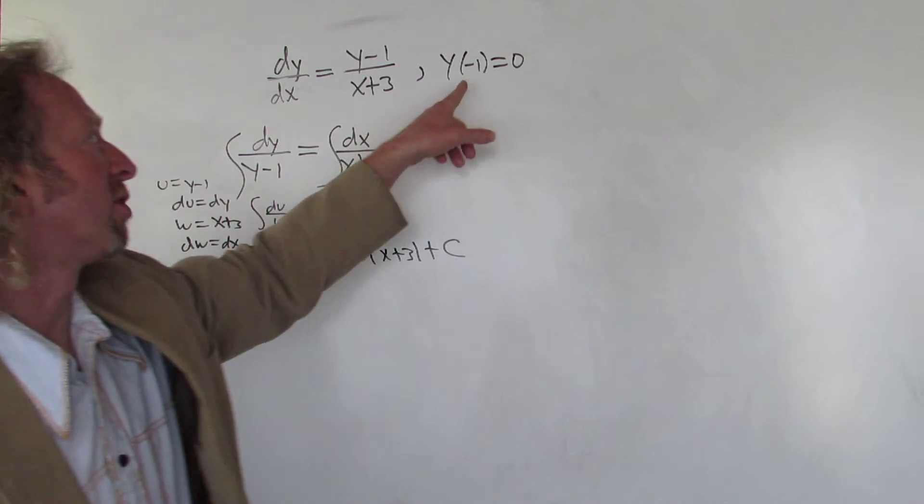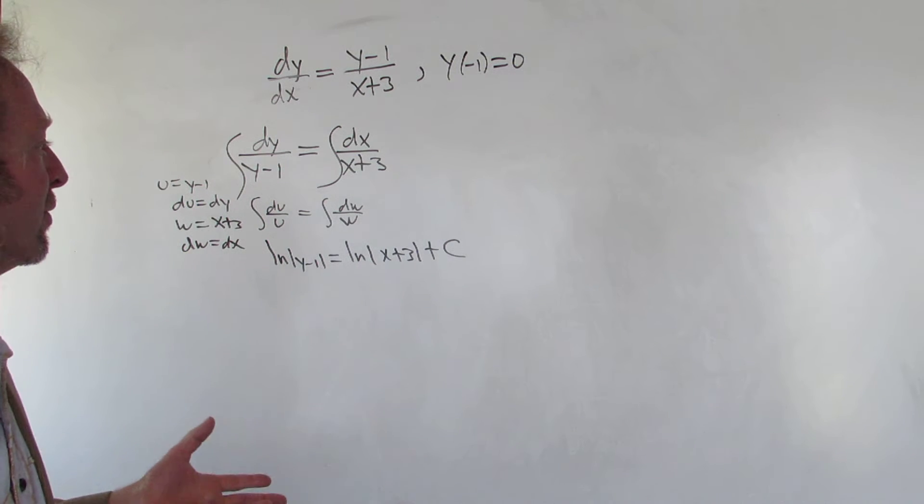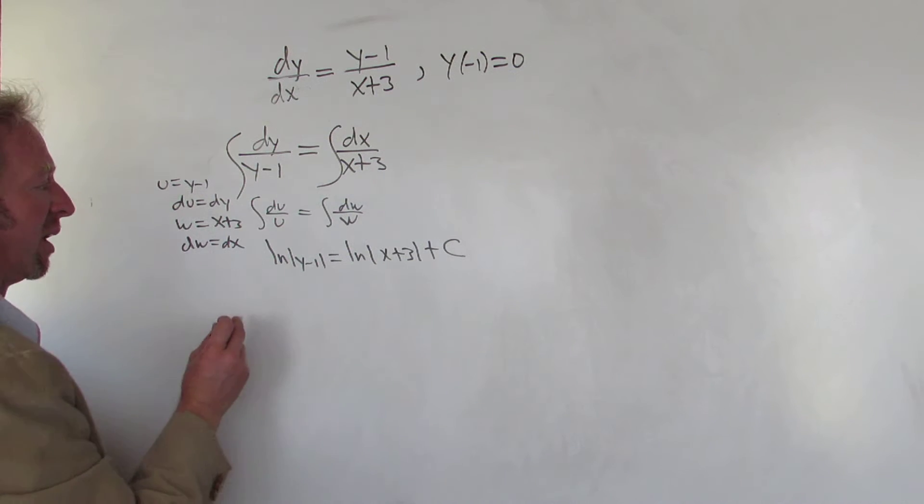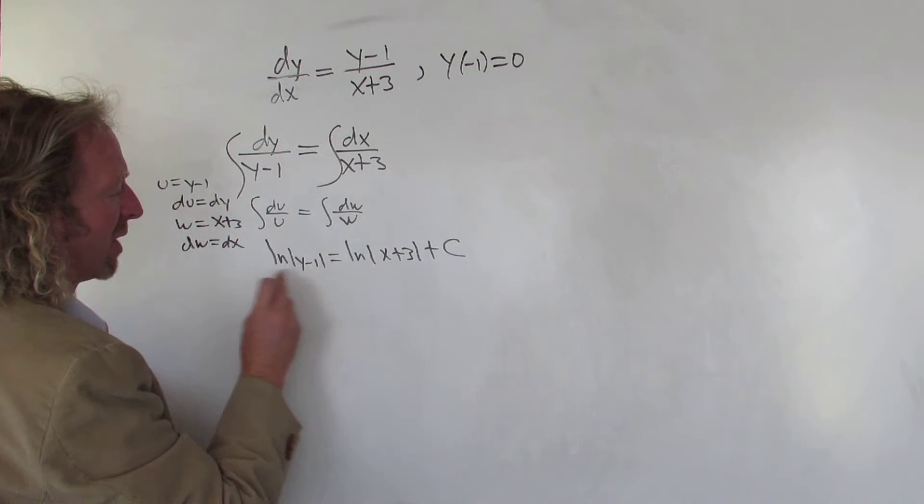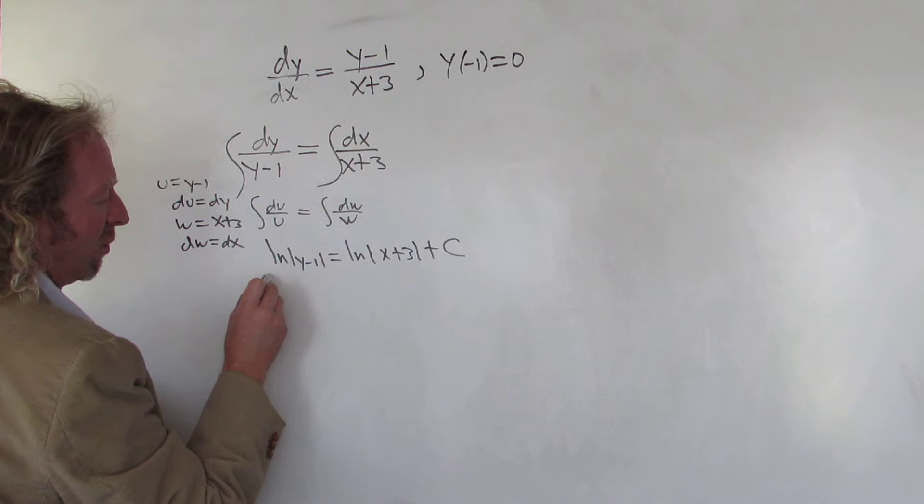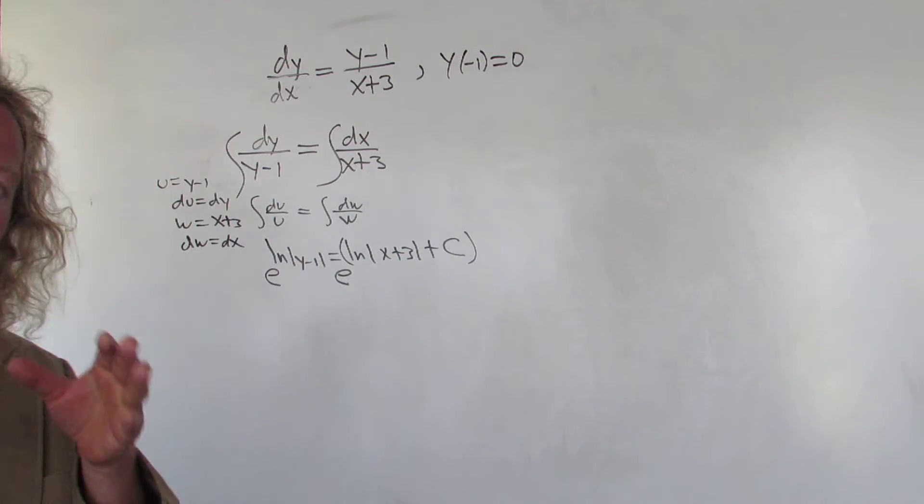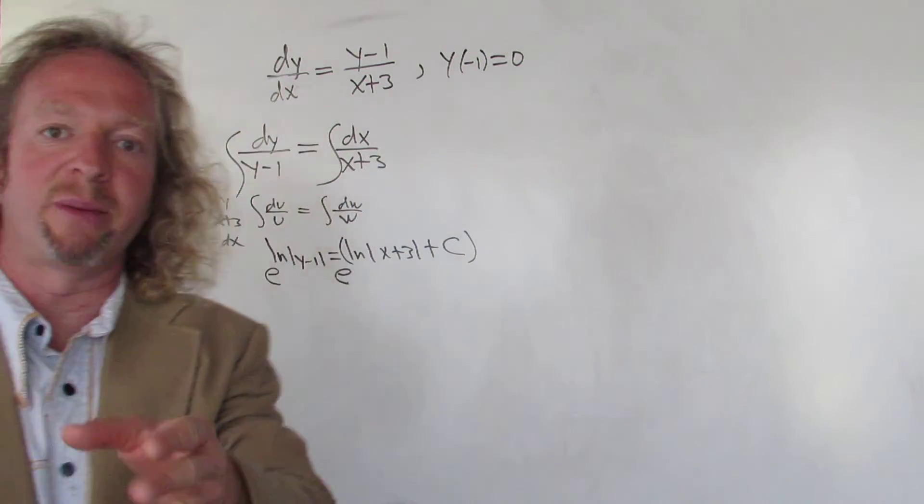This is an initial value problem, so we do have to find the value of c. We can find it now or later - I don't think it really matters. Let's find it later. The next thing to do will be to exponentiate both sides, and the reason is we want to solve for y.